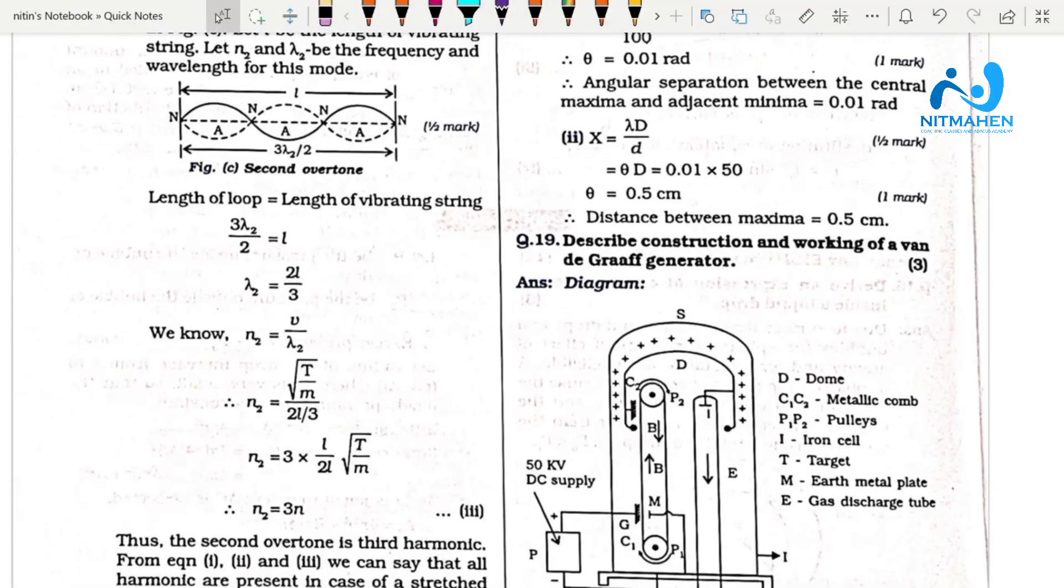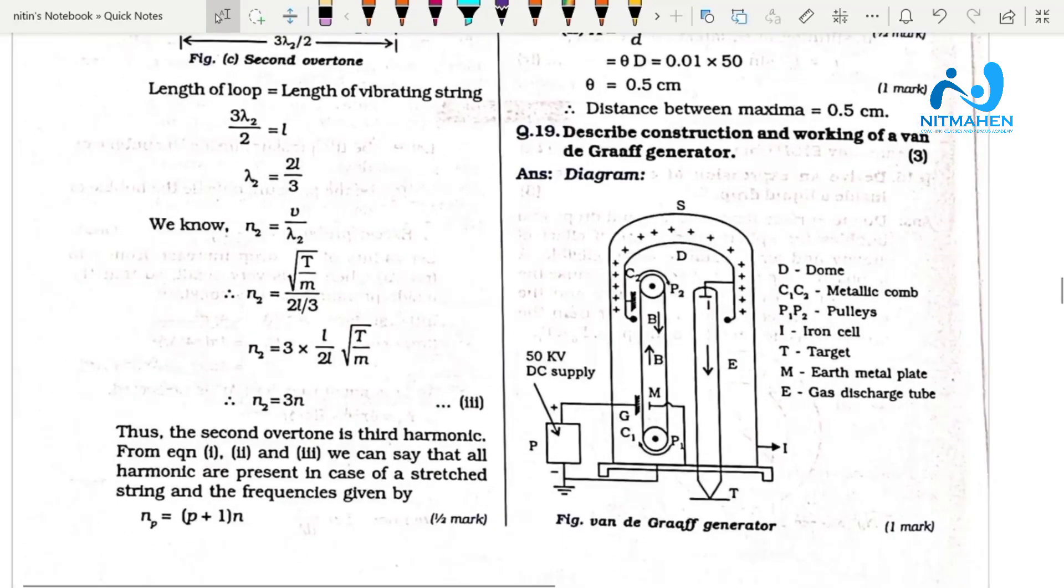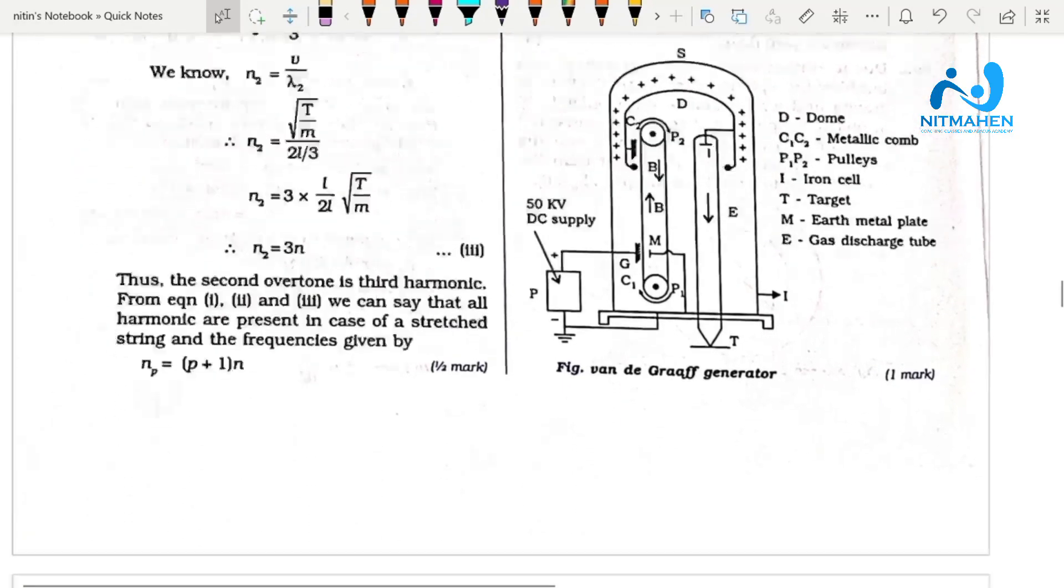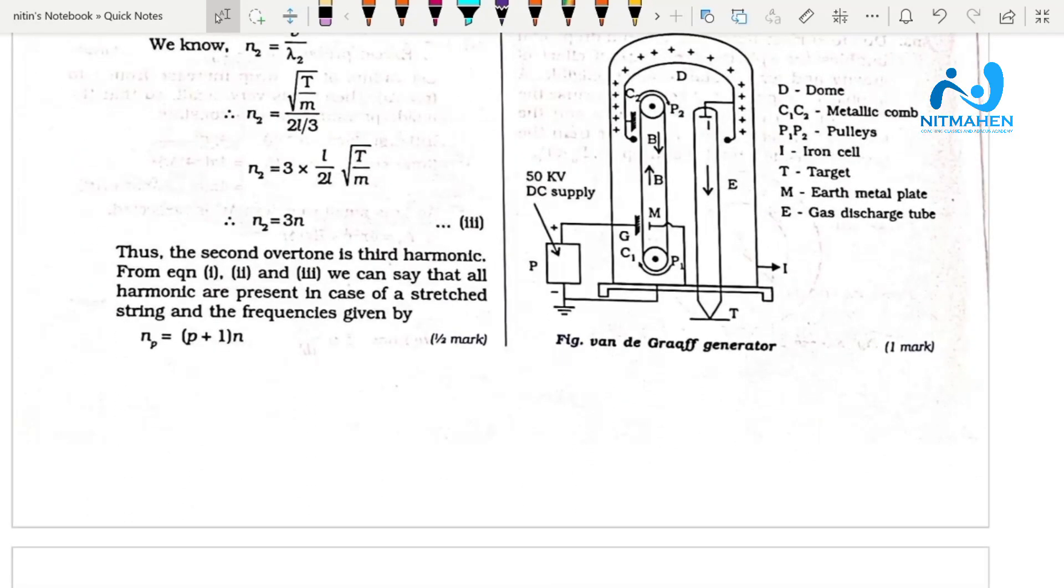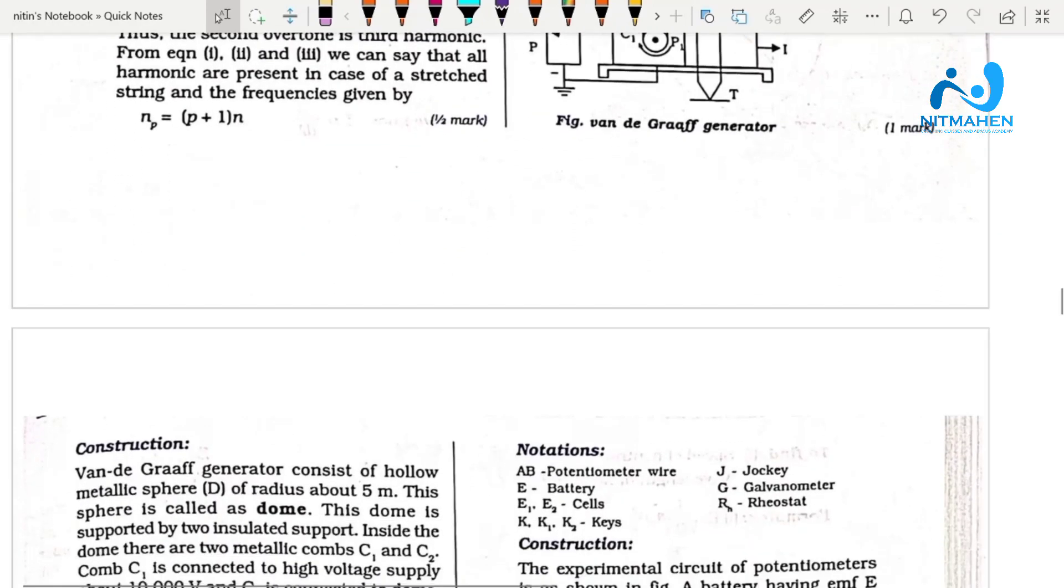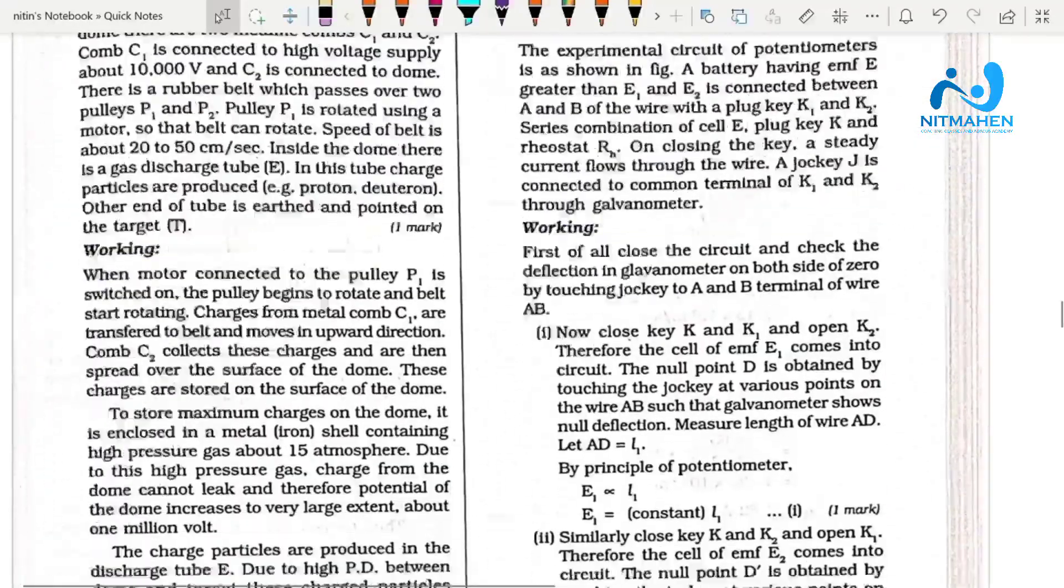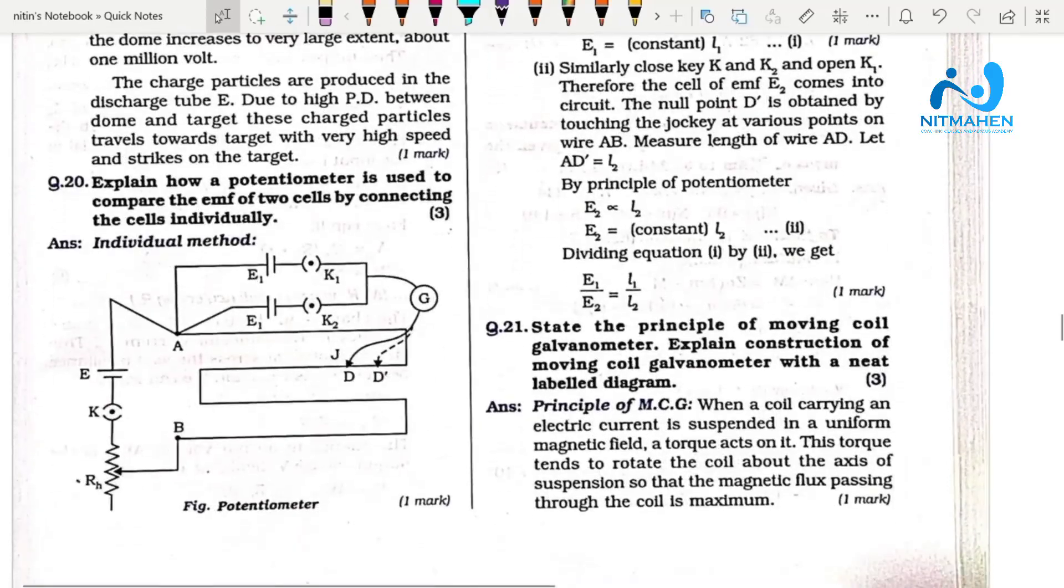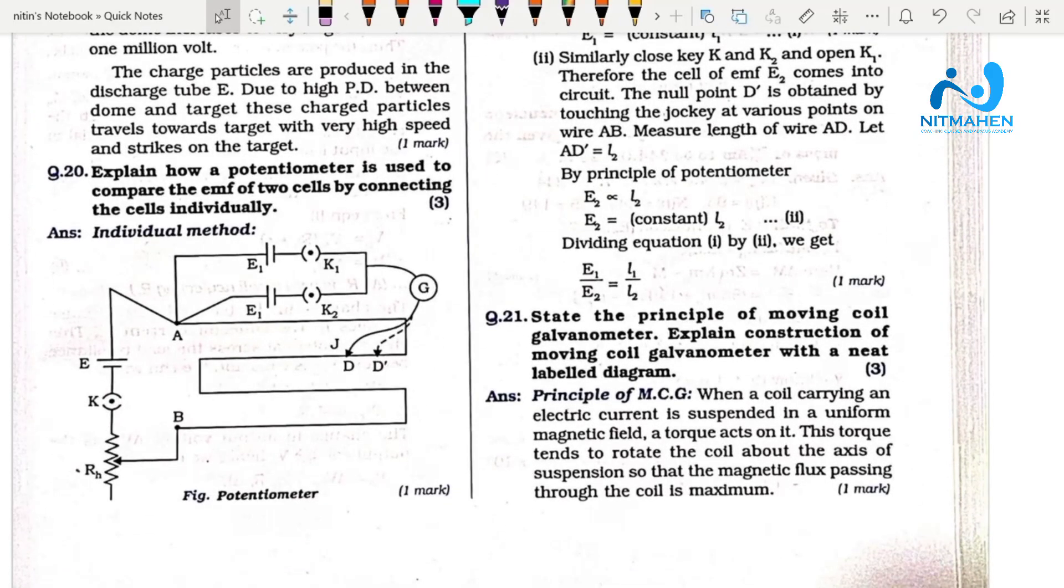Question 19 describes the Van de Graaff generator - draw the diagram, explain construction and working with systematic diagram. Then explain how the potentiometer is used to compare the EMF of two cells by connecting them individually and then jointly.